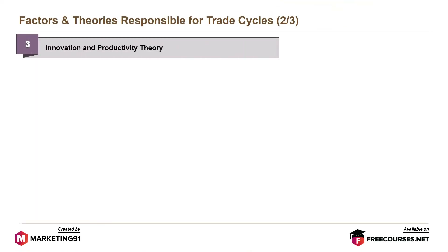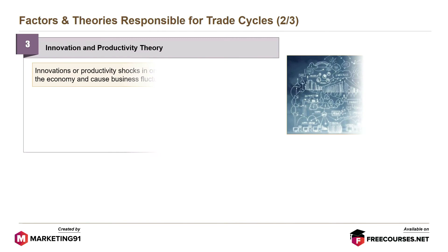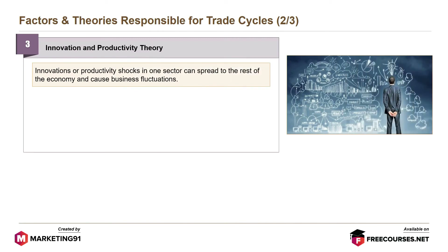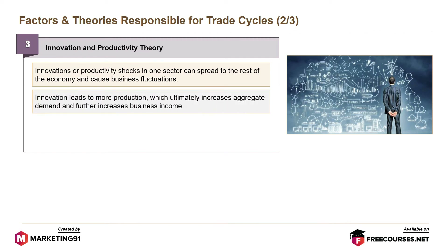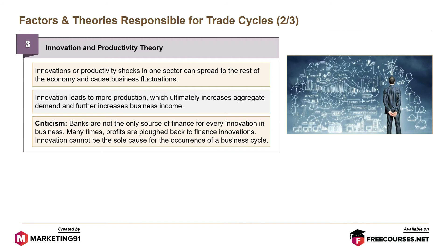Next is the innovation and productivity theory. Innovations or productivity shocks in one sector can spread to the rest of the economy and can cause business fluctuations. Innovation leads to more production, which ultimately increases aggregate demand and further increases business income. Criticism: banks are not the only source of finance for every innovation; profits are often ploughed back to finance innovations, so innovations cannot be the sole cause of a business cycle.